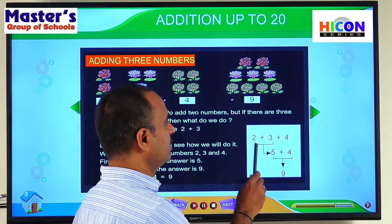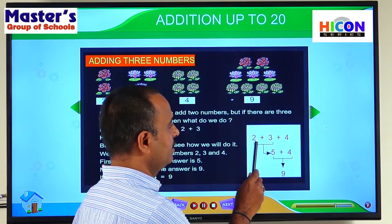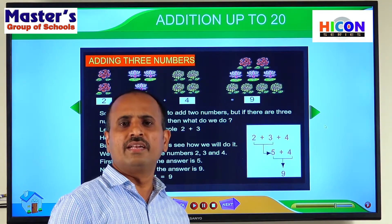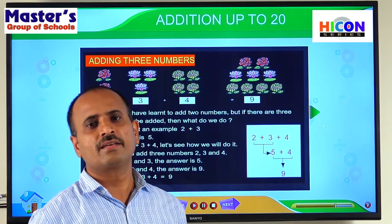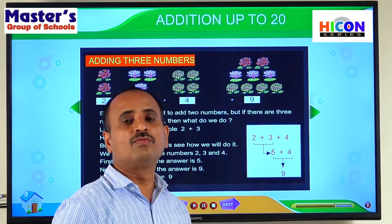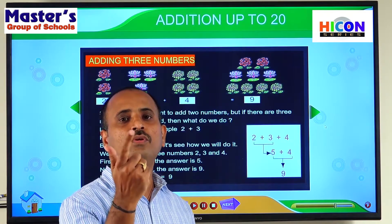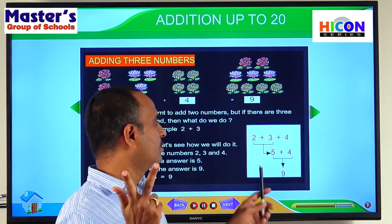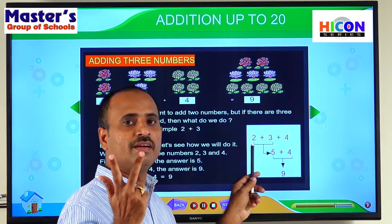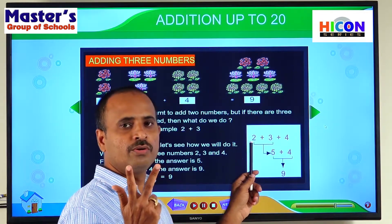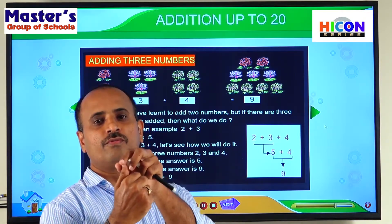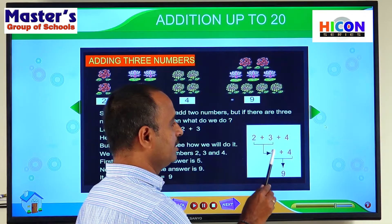So how can we add the first two numbers — two plus three? The second number is three, so open three fingers from your hand: one, two, three. And start counting from the first number. The first number is two, so start counting after two: three, four, five. So the sum of two and three is five.